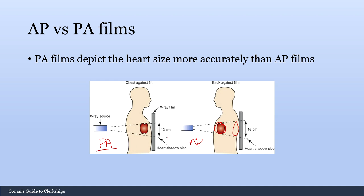If PA films are so much better, then why do we even get AP films? A lot of times you have patients who are lying in bed and are not very mobile. For a PA film, you often need to be able to stand up to get this orientation. But if you're lying in a hospital bed, it's easier and more convenient to just get that AP film from a portable chest x-ray. That's why you'll still see plenty of AP films during your rotations.